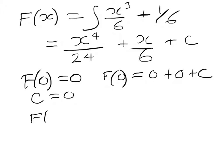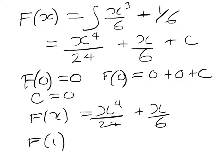So F of x equals x to the power 4 over 24 plus x over 6. So to use that to find F of 1, I want the probability that x is less than or equal to 1. In fact, I'll just make that very clear.